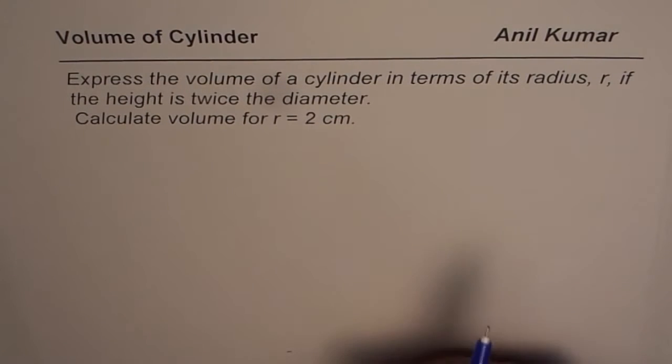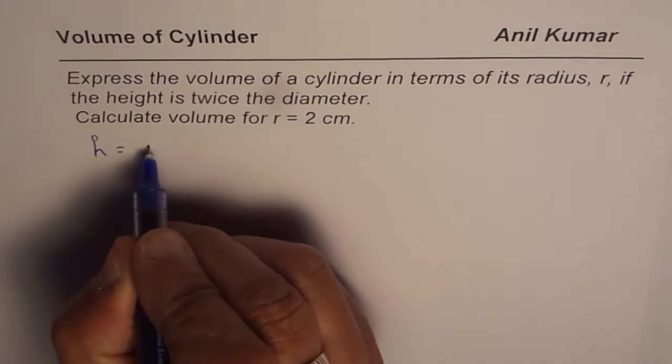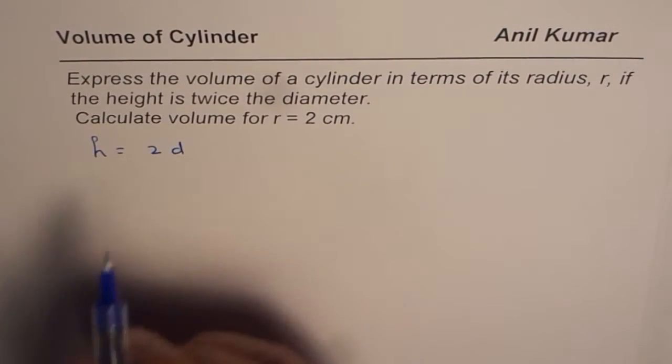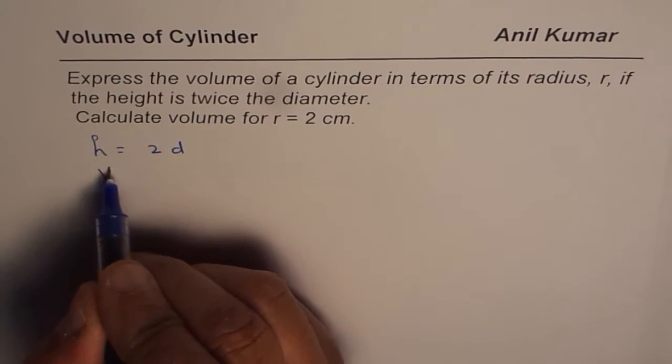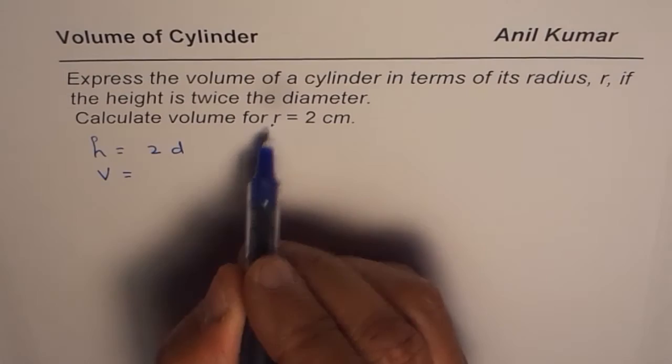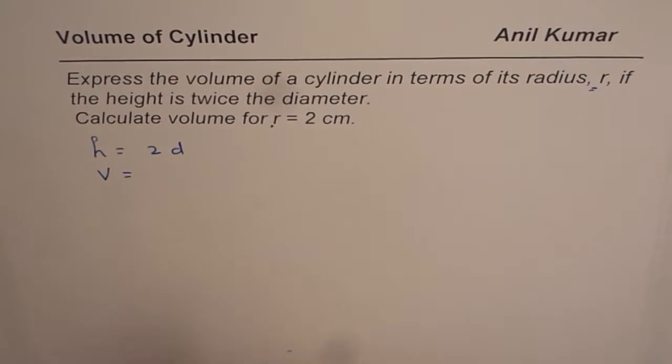So we are given here that height is equal to 2 times diameter. Height is twice the diameter. We have to write the formula for volume in terms of radius r.